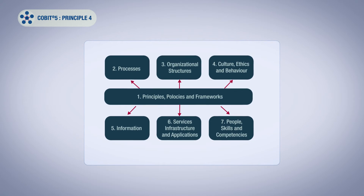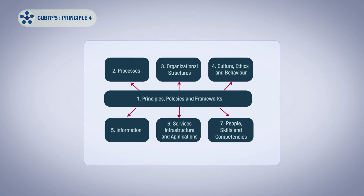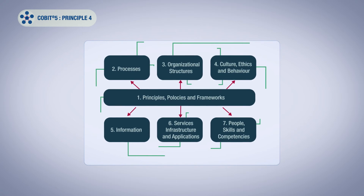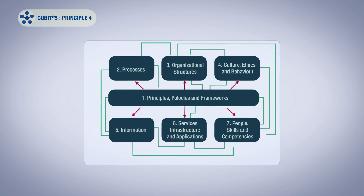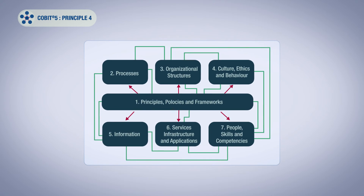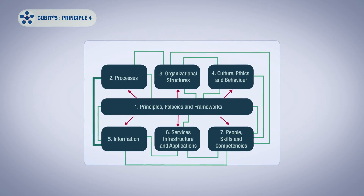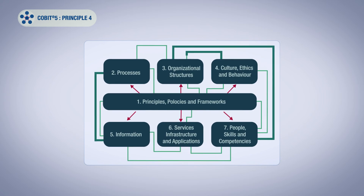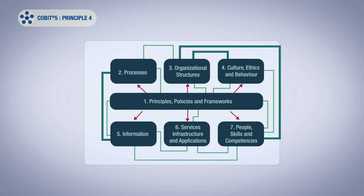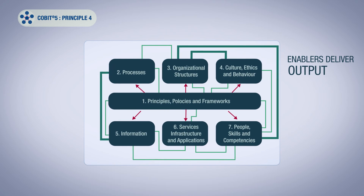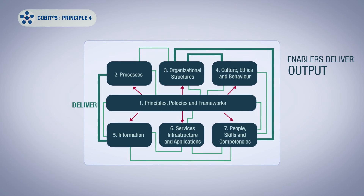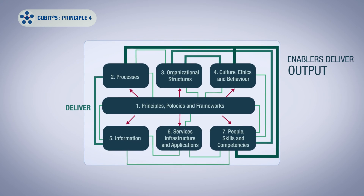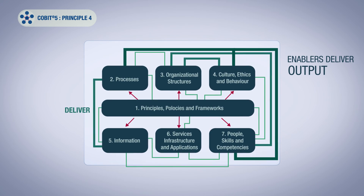Looking at COBIT-5's set of seven enablers, we should recognise that enablers are connected. By this we mean that each enabler needs the input of other enablers to be effective. For example, processes need information, and organisational structures need skills and behaviour. Equally, enablers deliver output to other enablers — for example, processes deliver information, and skills and behaviour make processes efficient.